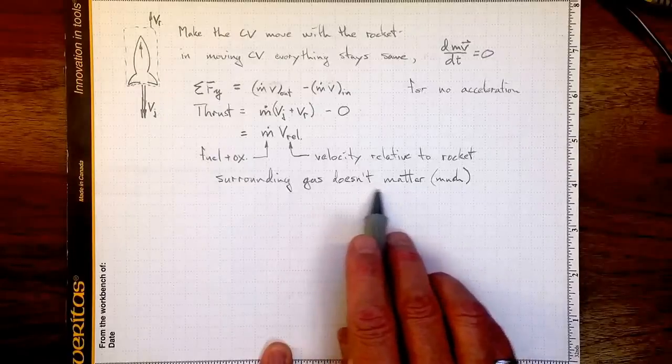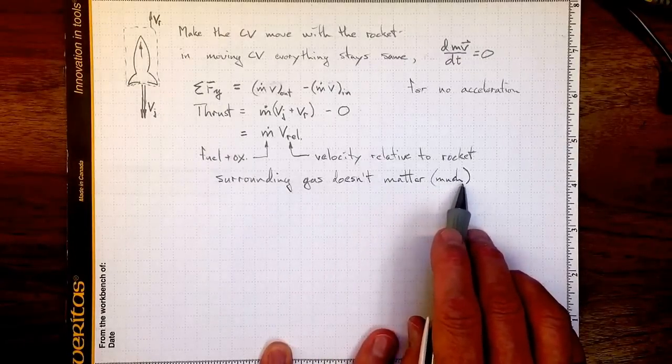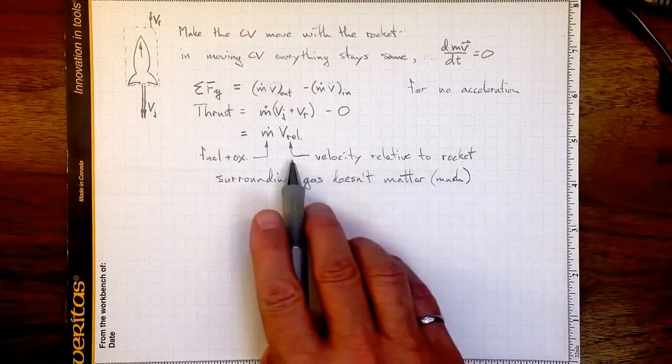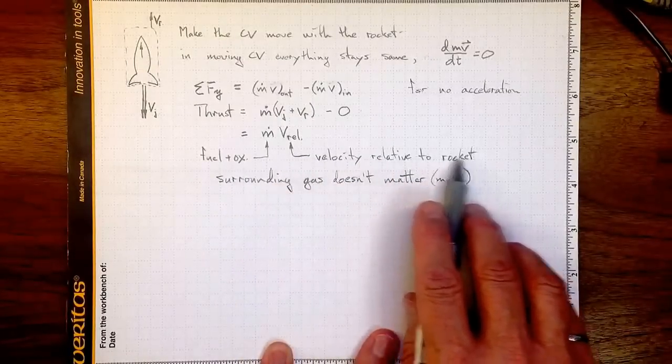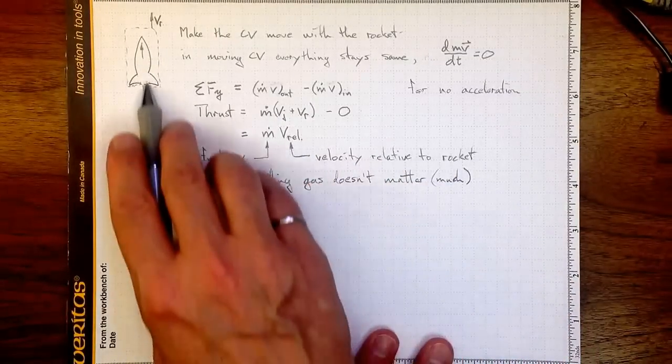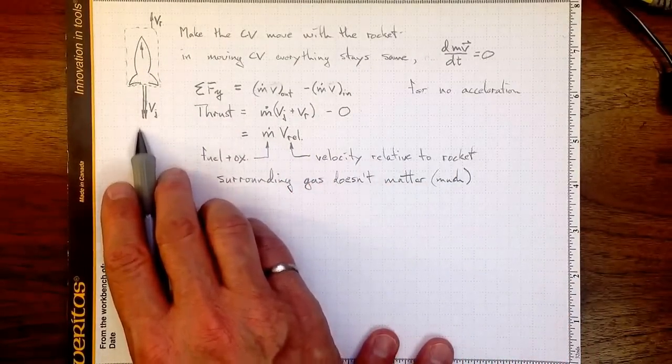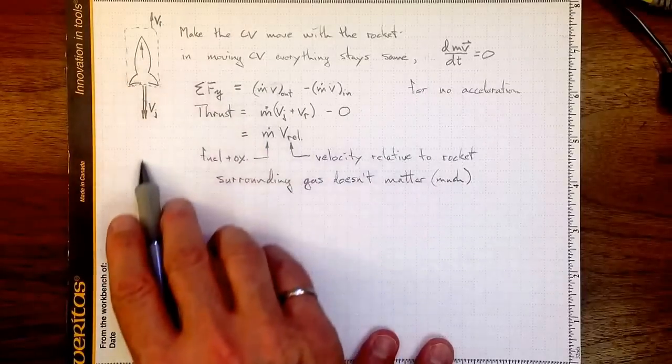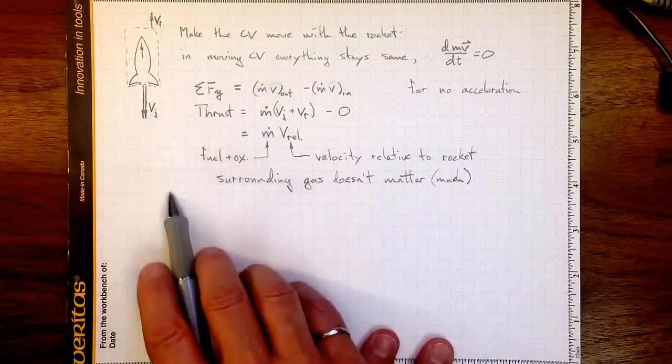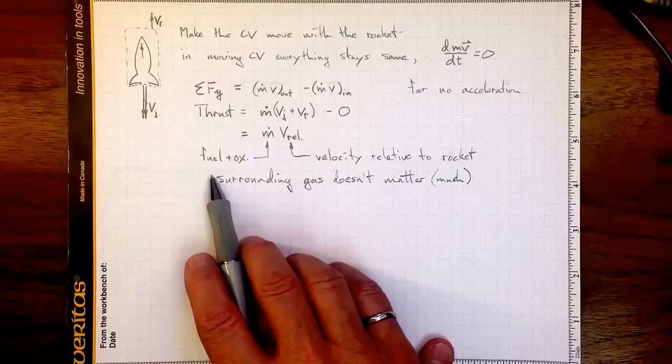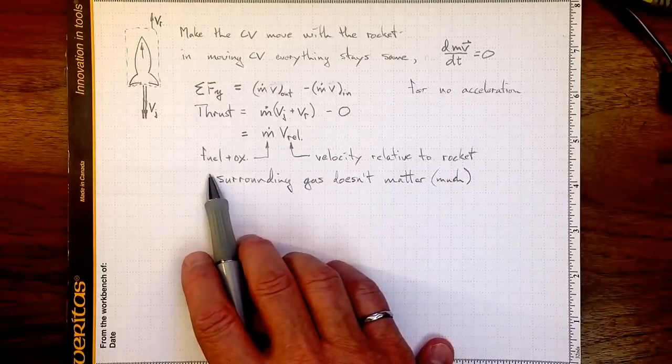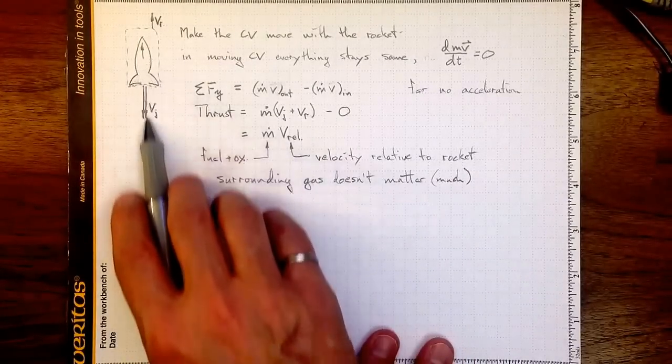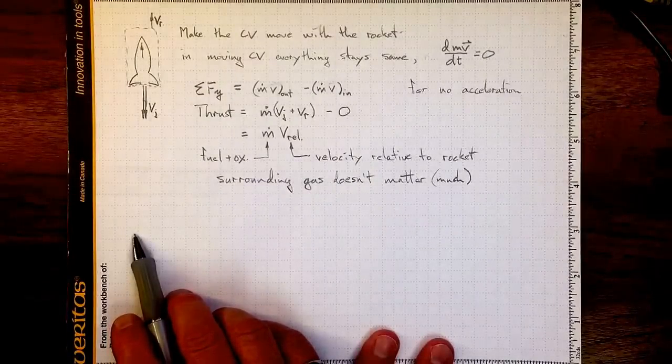Surrounding gas really doesn't matter, or at least not much. There are some details relating to just how fast you can get the fuel to come out of the back of the rocket if there is a surrounding gas. Depending on the diffuser, you'll learn some more about when you study compressible flow. But the big thing is, how fast is mass coming out of the back of the rocket?